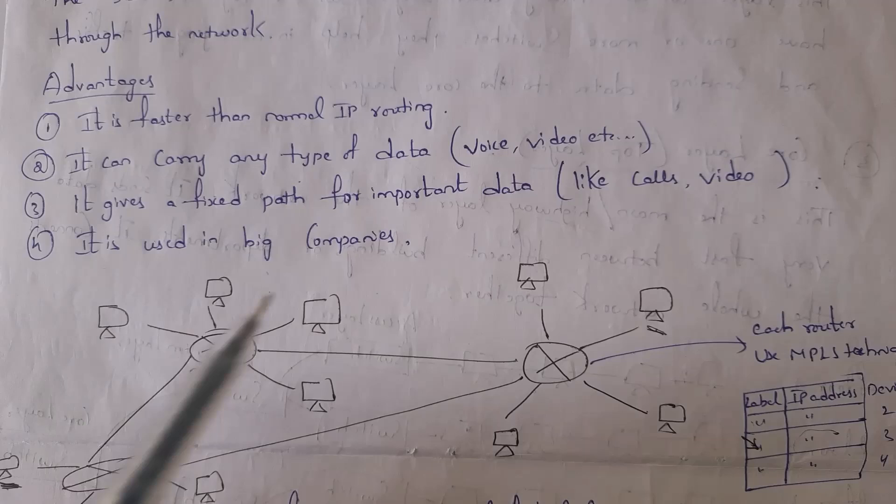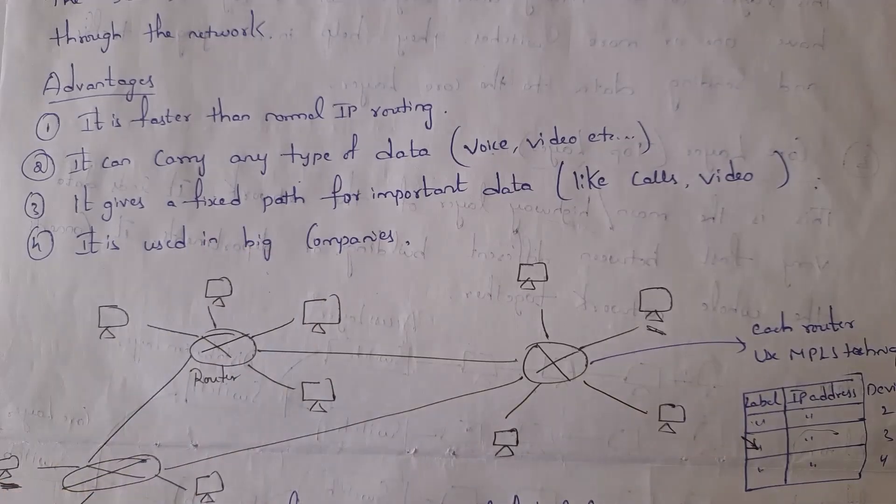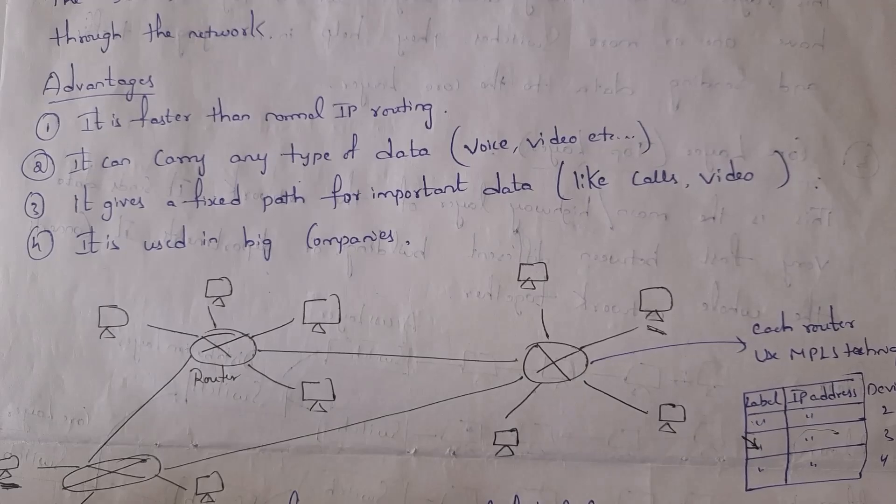If there is any important data, there is a fixed path. Fixed path is nothing but a path which will not change. So if there is any important data, data will be transferred through a fixed path. Fixed path is given to important data like video calls, voice calls, etc. And this MPLS technique is used in big companies.